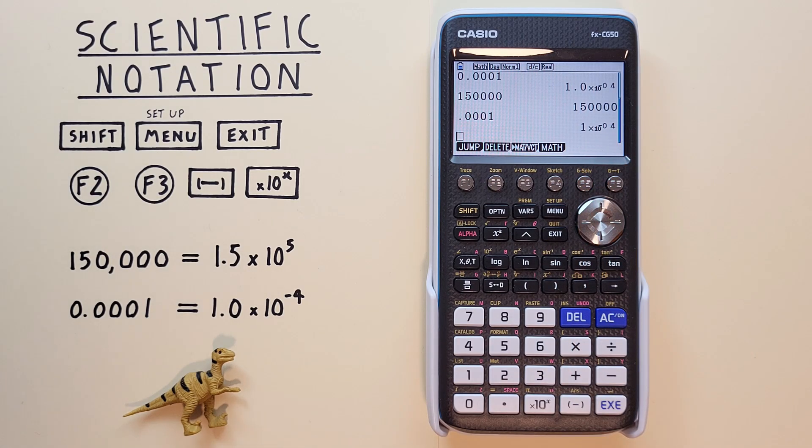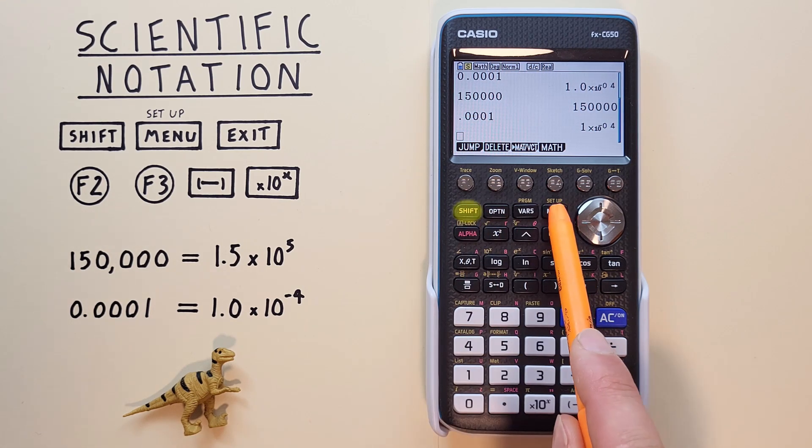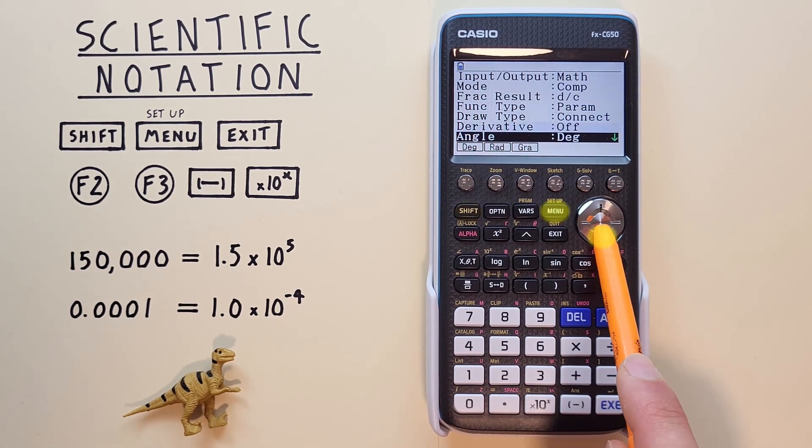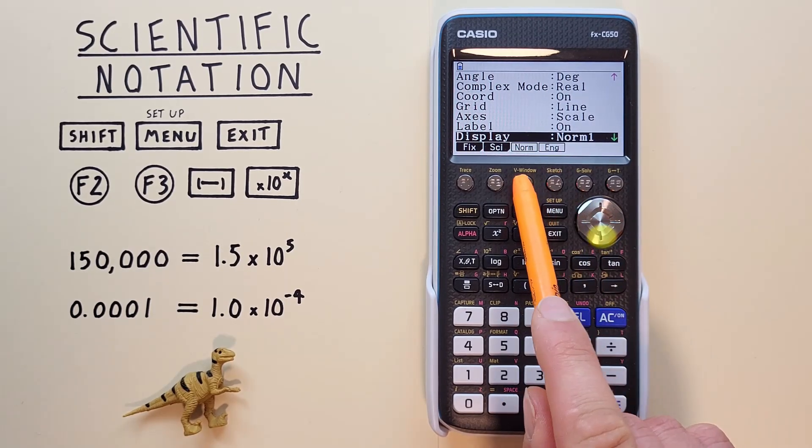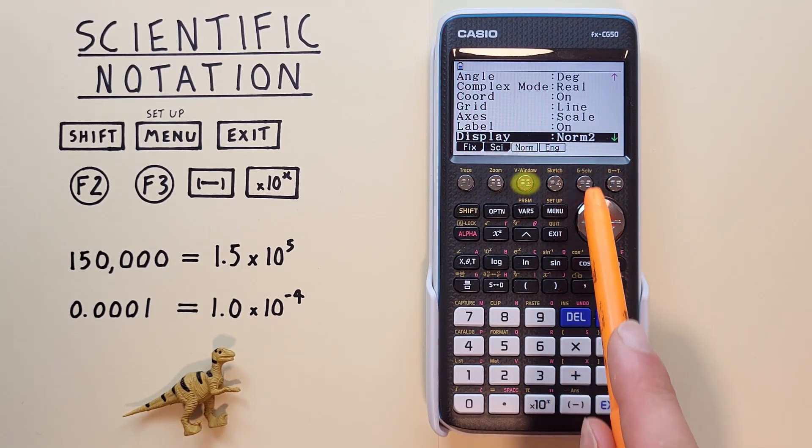If we don't want any scientific notation and want to go back to our original mode, we use the Shift Menu, normal mode 2, and select that.